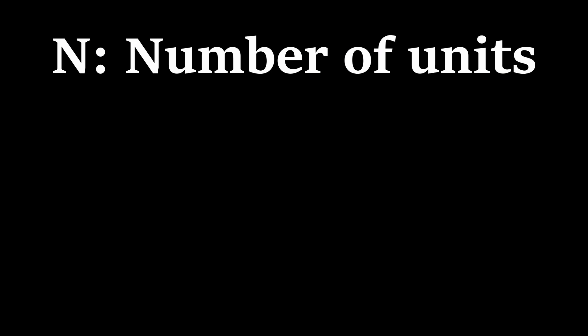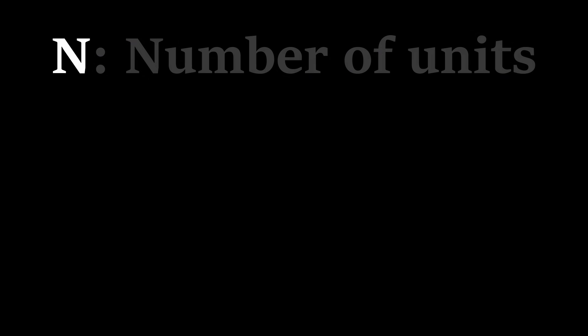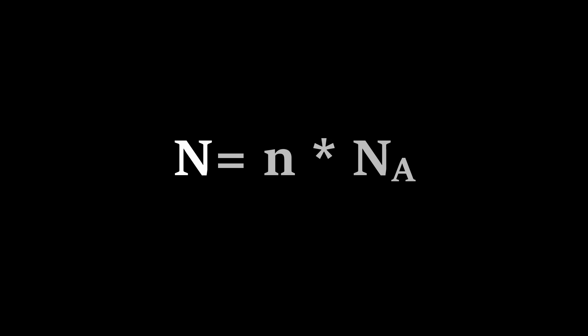If you want to know the number of atoms or molecules in your mass of a certain substance, you can simply multiply the number of moles of the substance you have by Avogadro's number to obtain this value.